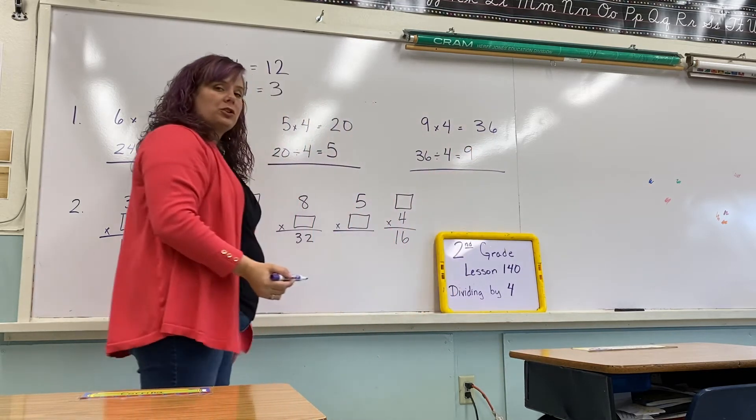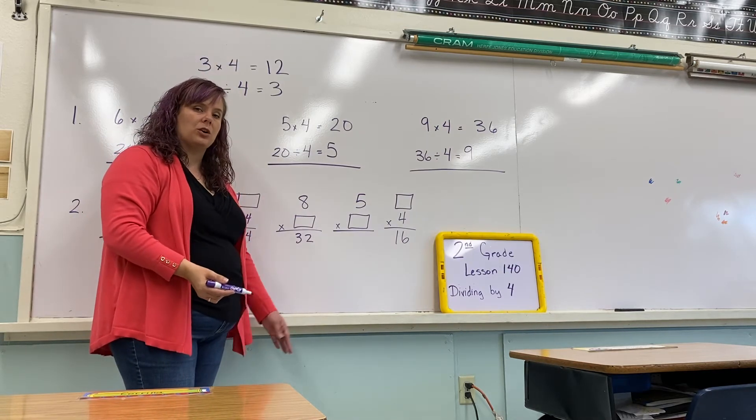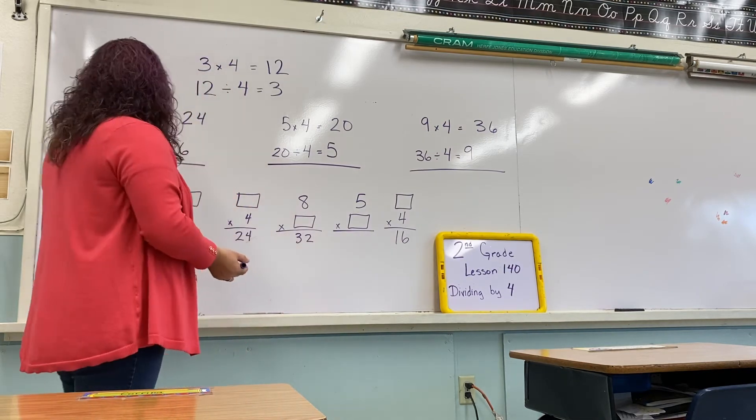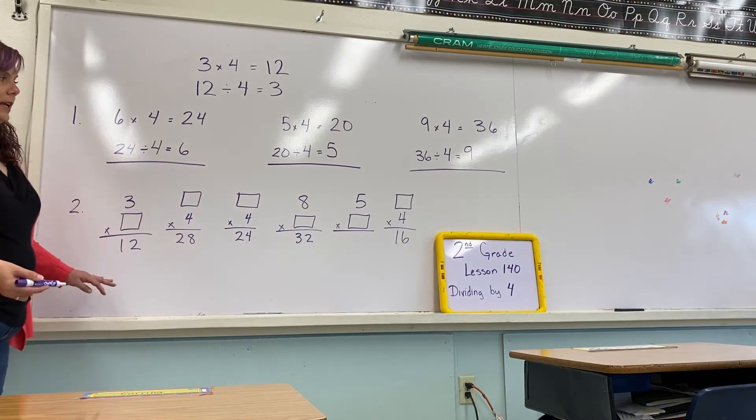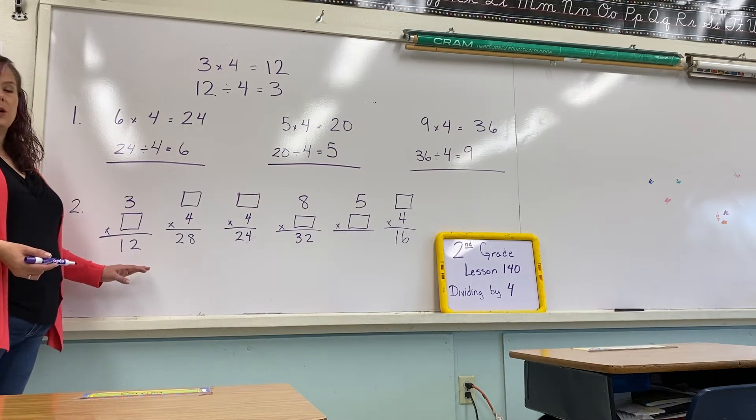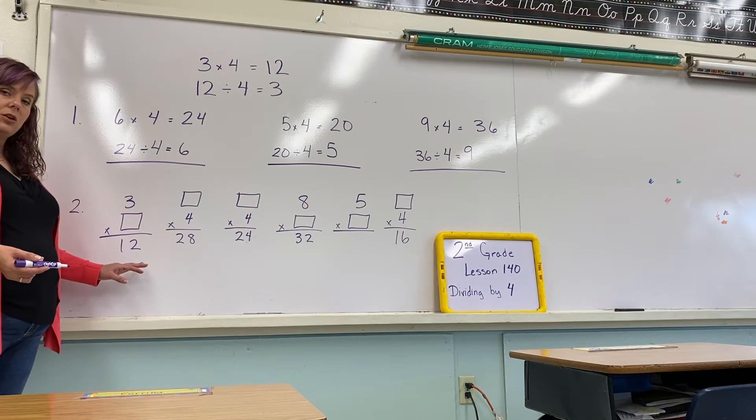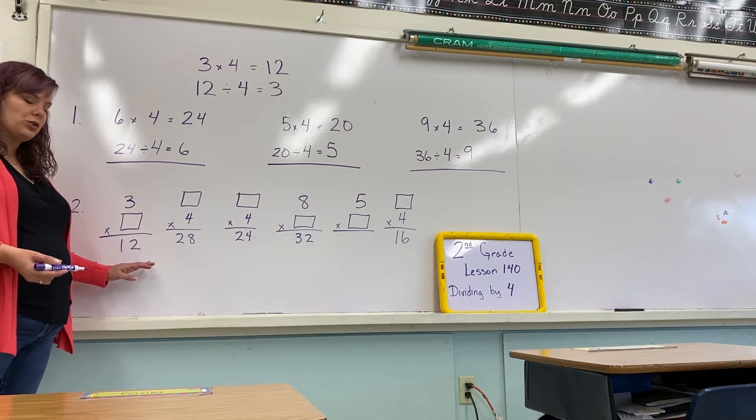You see how it's just a flipping? Multiplication and division are just the opposite of each other. Now, in number 2, it asks you to fill in the missing number, and this can be fairly easy, but this is also another form of division. You're doing the opposite.